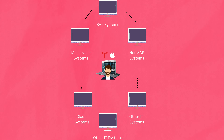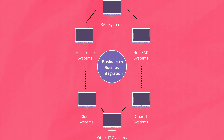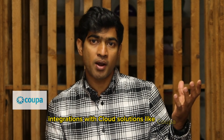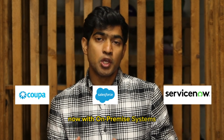To integrate different systems, you can build A2A integrations — application-to-application integrations. You can also build B2B integrations — business-to-business integrations — to talk to external parties. Or if you want to build integrations with cloud solutions like Coupa, Salesforce, or ServiceNow with on-premise systems, you can use SAP CPI.